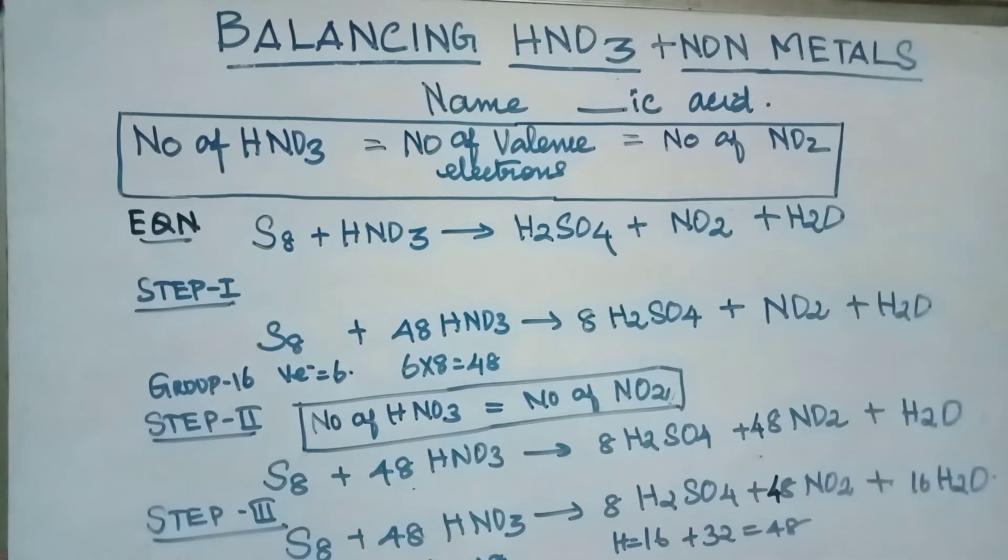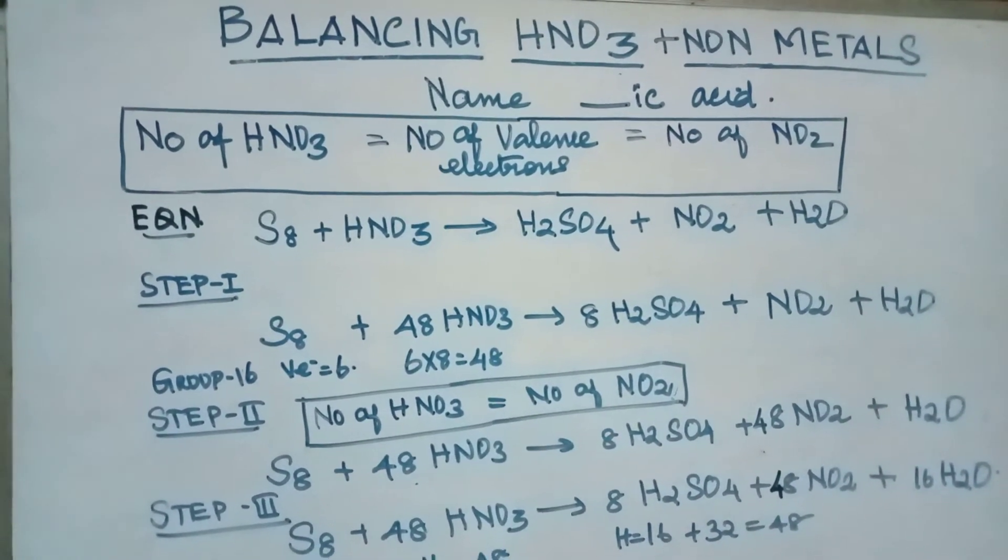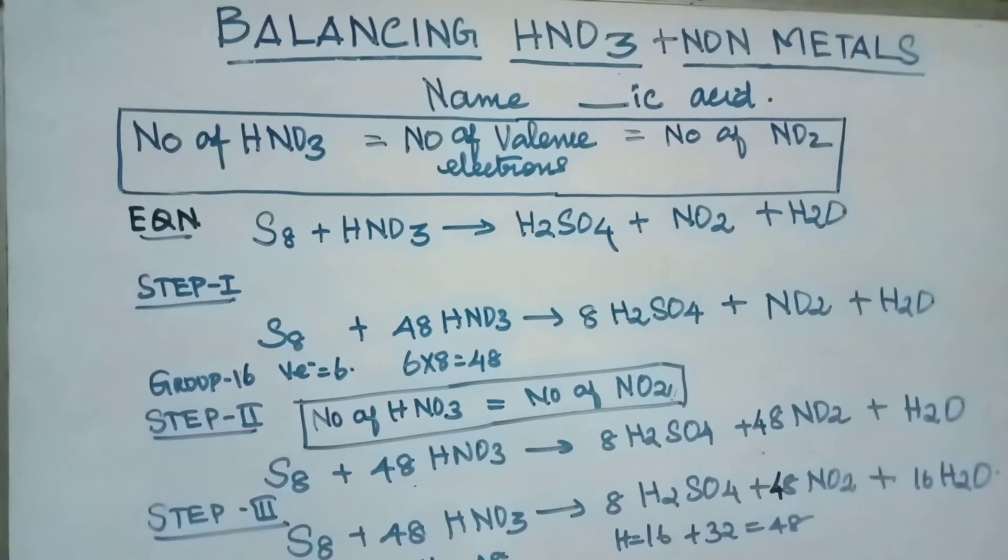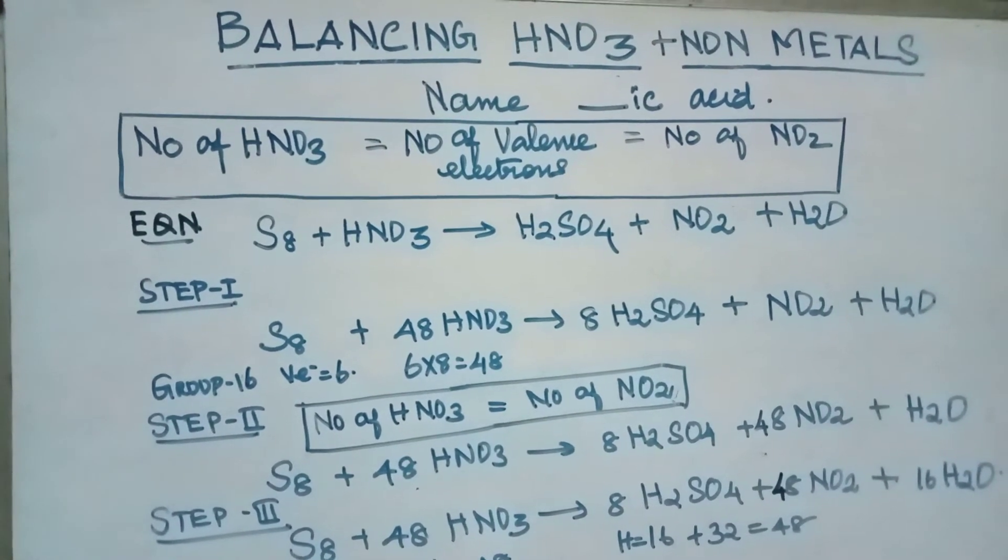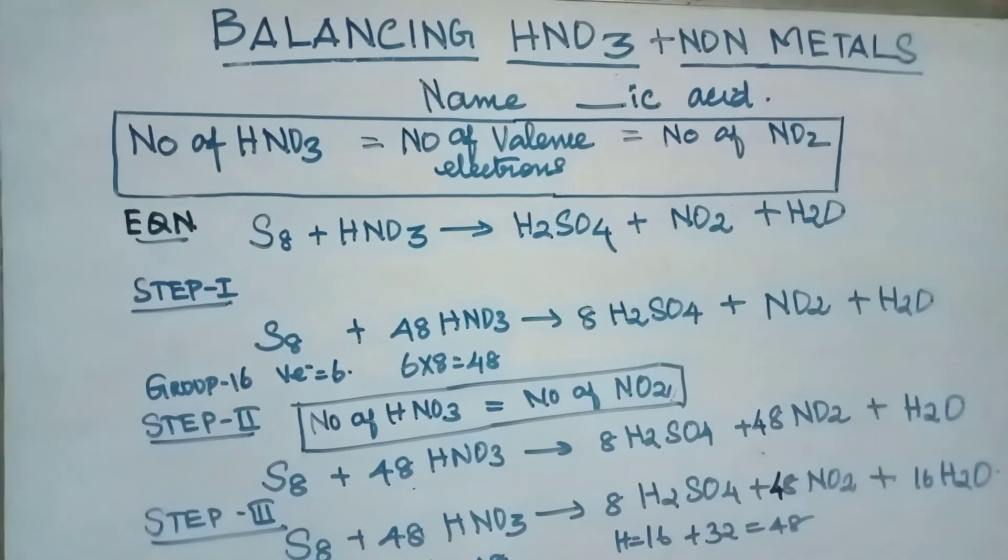Step 2. Number of nitric acid is equal to number of nitrogen dioxide. So, if we fill out, S8 plus 48 HNO3, 8 H2SO4 already there. 48 HNO3 is equal to 48 NO2. Fill out, then H2O.